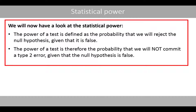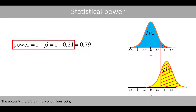The power of a test is defined as the probability that we will reject the null hypothesis given that it is false. The power of a test is therefore the probability that we will not commit the type 2 error given that the null hypothesis is false. The power is therefore simply 1 minus beta.